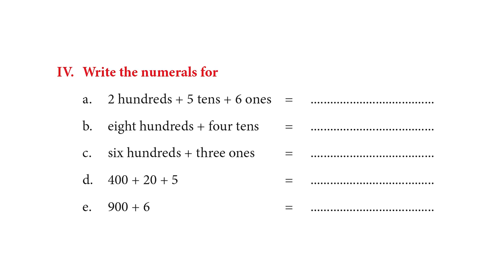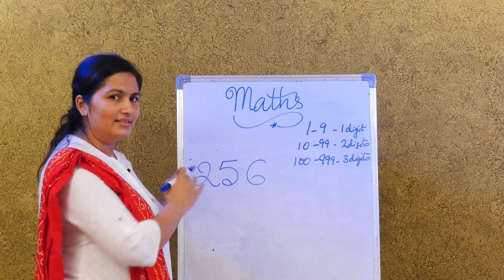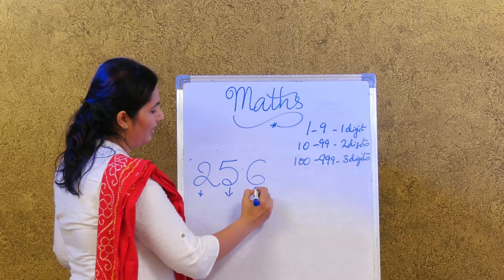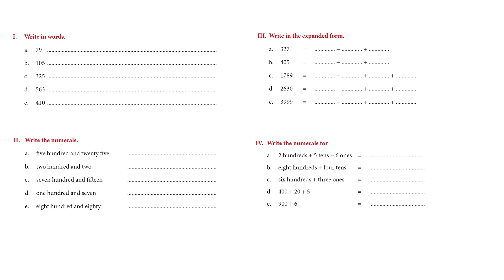Moving on to page number 47: write the numerals for two hundreds, five tens, and six ones. You learnt the place value house earlier — two hundreds, five tens, and six ones gives us 256. Go ahead and finish the rest of the exercise.